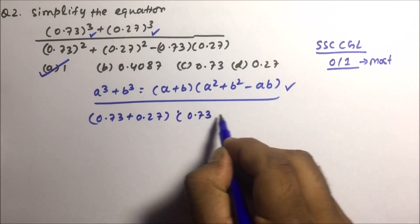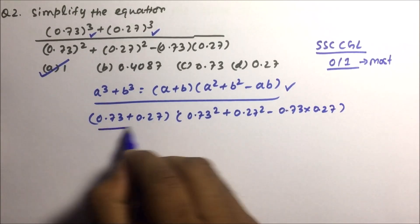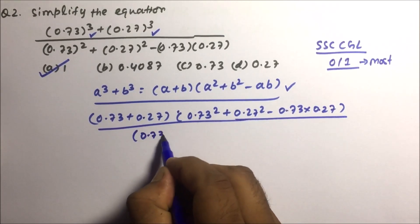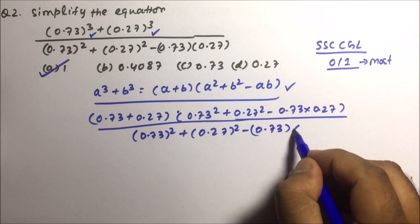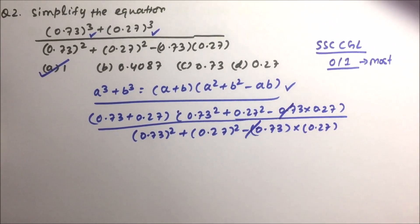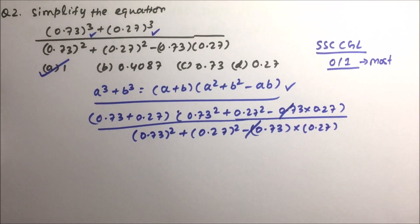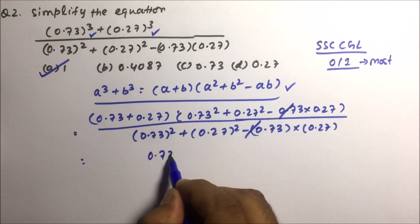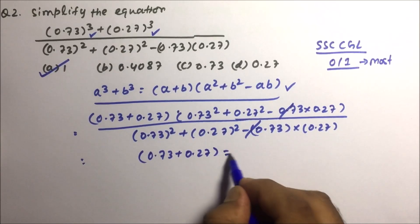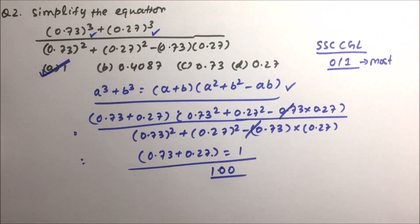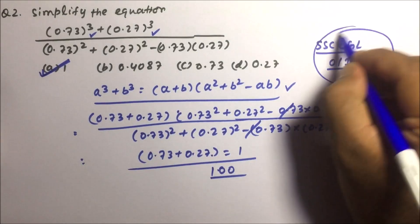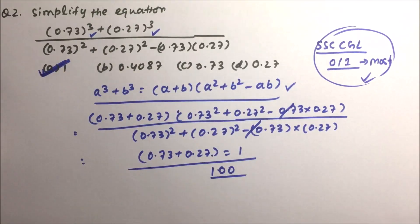So a³ + b³: we have (0.73 + 0.27) × (0.73² + 0.27² − 0.73 × 0.27), divided by (0.73² + 0.27² − 0.73 × 0.27). The numerator and denominator cancel out, leaving 0.73 + 0.27, which equals 1. So option A is the correct answer for question number two. Only formulas in algebra will help you solve questions quickly in the exam.